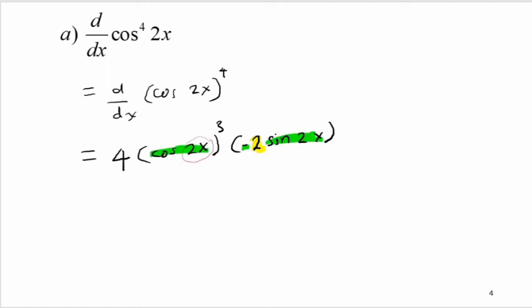We can simplify this to get −8·cos³(2x)·sin(2x). You can write it as −8·cos^3(2x)·sin(2x). That is our final answer for question a.